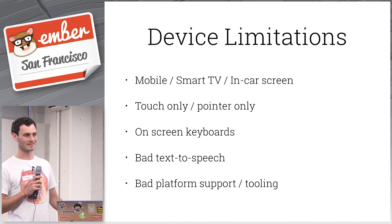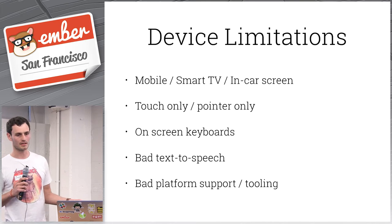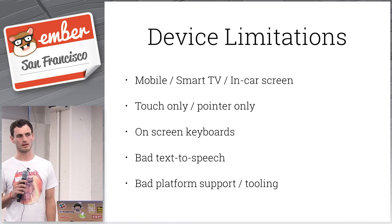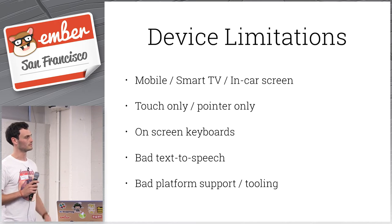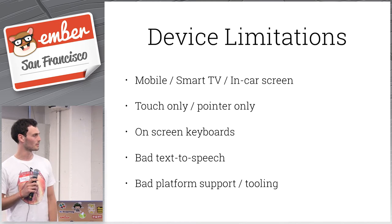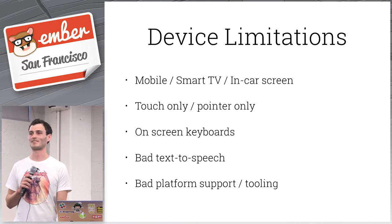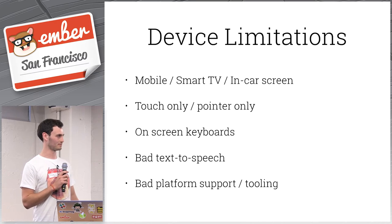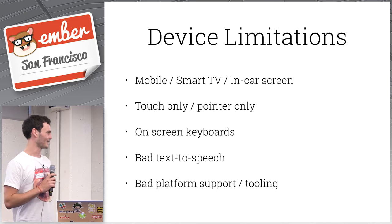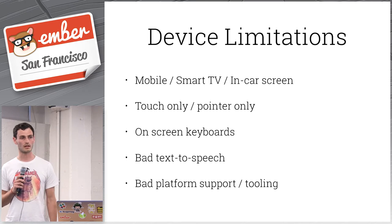Device limitations can also cause accessibility problems. Mobile devices, smart TVs with web browsers — people are using all sorts of things to look at the internet. Cars included apparently. So sometimes you might be in a situation where click events are not a thing; it's actually touch events.